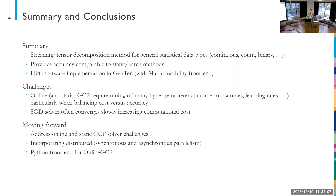To finish up: we presented a new streaming decomposition method for general statistical data types that provides accuracy comparable to batch methods, implemented in HPC software GenTen. However, GCP in general has many parameters requiring tuning to get good performance, mostly because it converges slowly. We have two GCP solves per time step, essentially doubling the number of parameters to tune. Future work includes making the algorithm more robust to hyperparameters by getting it to converge faster. We don't currently have a distributed memory parallel implementation of the streaming method, nor a Python front-end integration, but neither is challenging — just haven't had time.